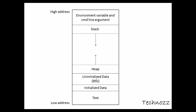The third section is uninitialized data, also called BSS. Whenever in your program you create any global variable or static variable and you do not assign it any value, it will be stored in this uninitialized data area. Those variables will be initialized to zero at runtime. So: initialized data holds all initialized global and static variables; BSS holds all uninitialized ones.